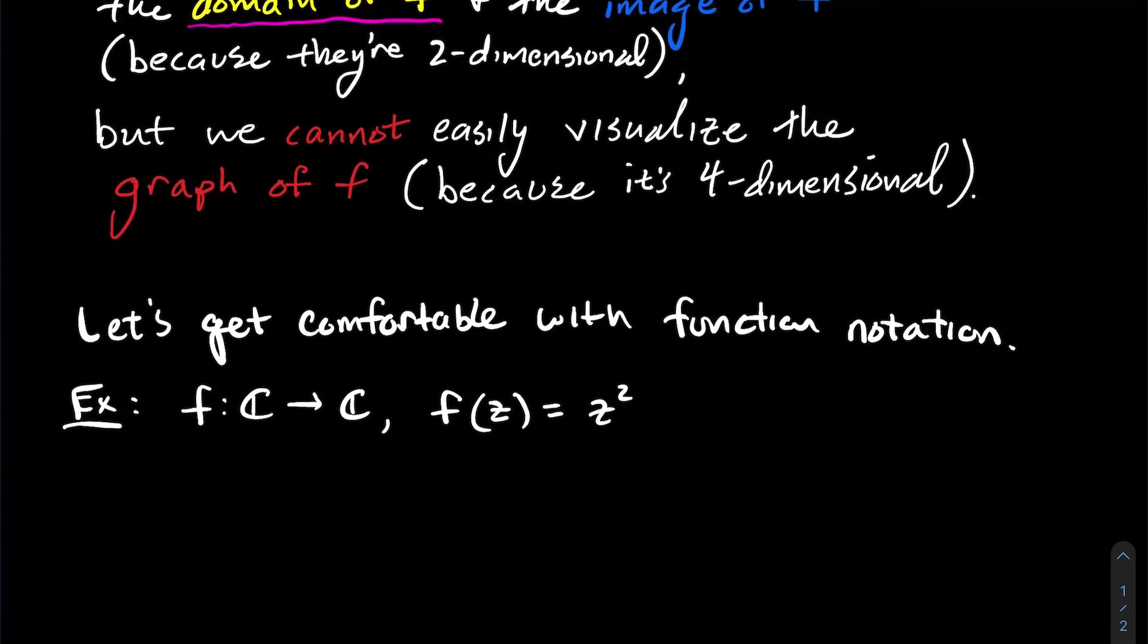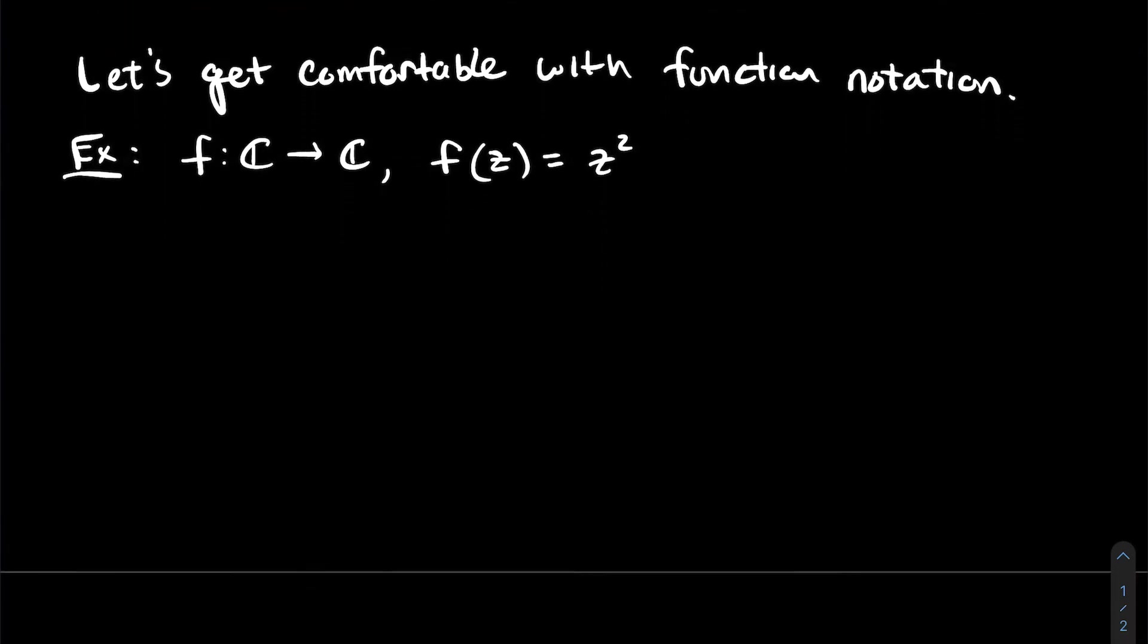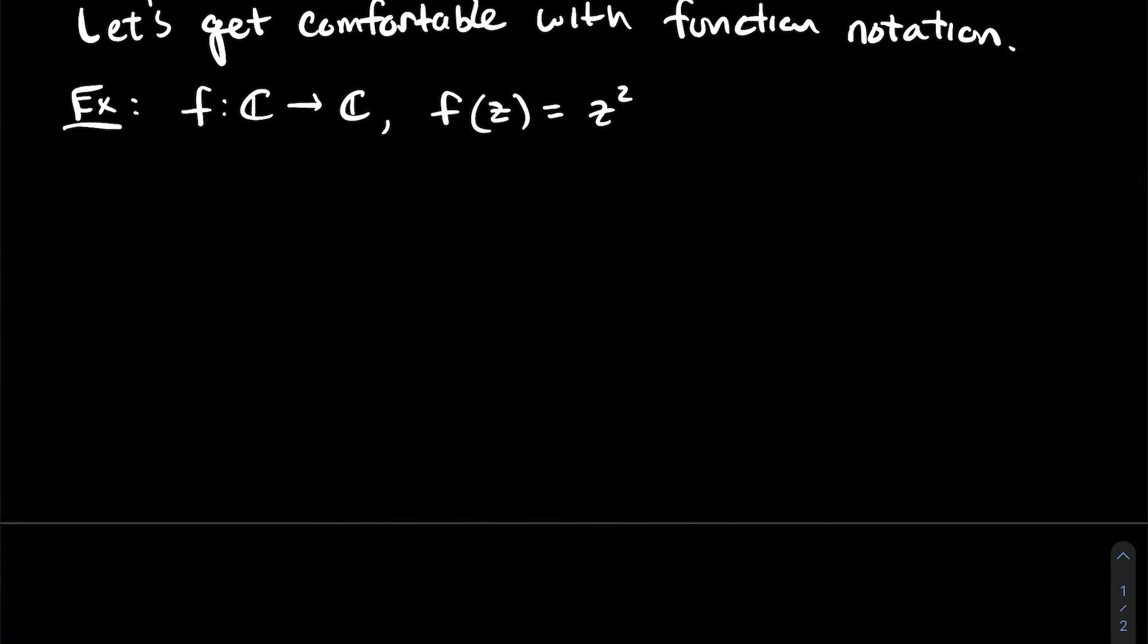So let's look at a concrete example. Let's take the complex value function, so from C to C, of f of z equals z squared. So I just square the input, so I want you to think of this function f.